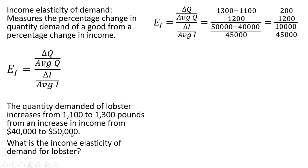The change in income. So income increases by $10,000, $50,000 minus $40,000. And then the average income or the midpoint between $50,000 and $40,000 is $45,000.